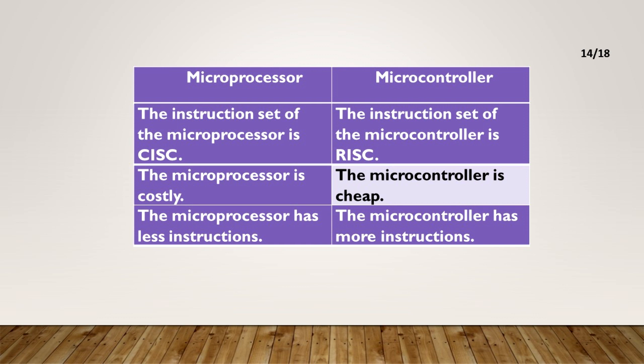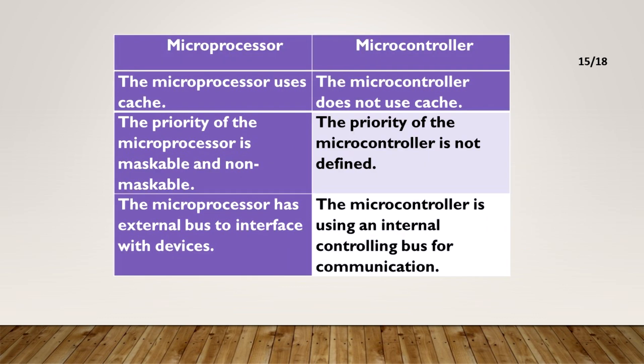The microprocessor is costly; the microcontroller is cheap. The microprocessor has fewer instructions; the microcontroller has more instructions. The microprocessor uses cache; the microcontroller does not use cache. The interrupt priority of the microprocessor is maskable and non-maskable. The interrupt priority of the microcontroller is not defined. The microprocessor has an external bus to interface with devices. The microcontroller uses an external controlling bus for communication.